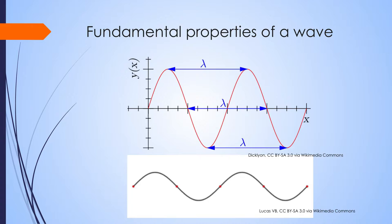The fundamental properties of a wave are its wavelength, which is represented by the symbol lambda, the Greek symbol, and its amplitude, which is the height of the wave, and its speed. For all light, the speed of light is constant in a vacuum at 3 times 10 to the 8 meters per second.